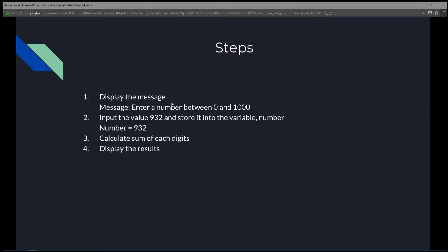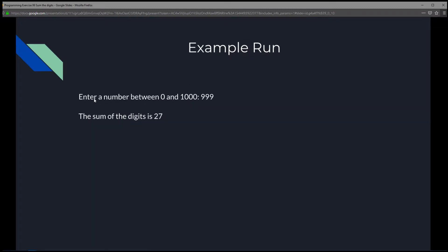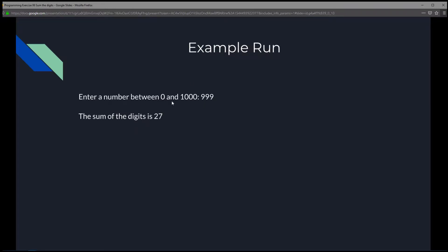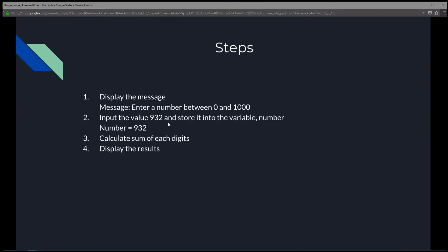We can do this in four simple steps. First, display the message: 'Enter a number between 0 and 1000.' Next, input the value — in this case 932 — and store it in a variable called number. Then calculate the sum of each digit: 2 plus 3 is 5, plus 9 is 14. Finally, display the result as 14.